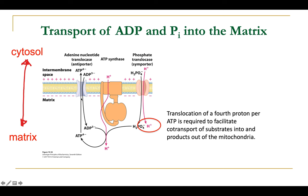The adenine nucleotide translocase couples the translocation of ATP — the final product of ATP synthase — from the matrix to the cytosol, with the opposite-direction transport of ADP — the substrate of ATP synthase — from the cytosol into the mitochondrial matrix. This system is made directional and efficient by the same electrochemical gradient that powers the ATP synthase.